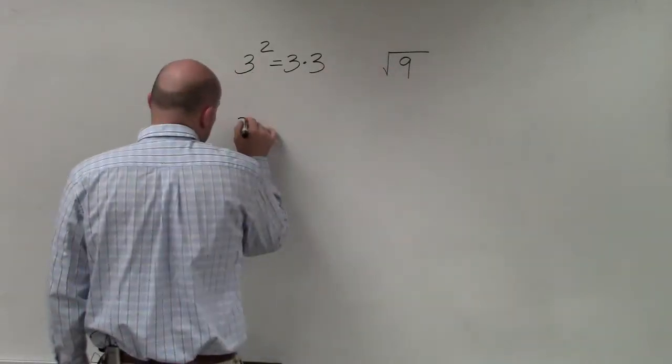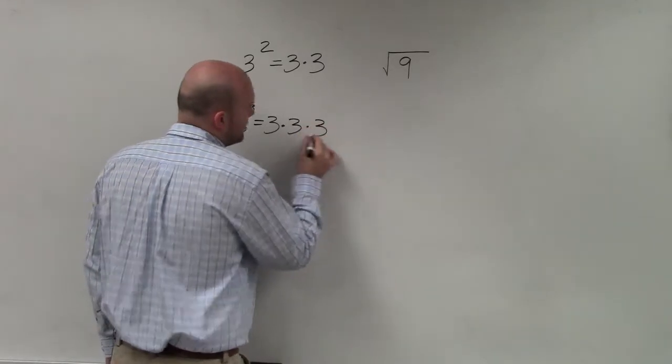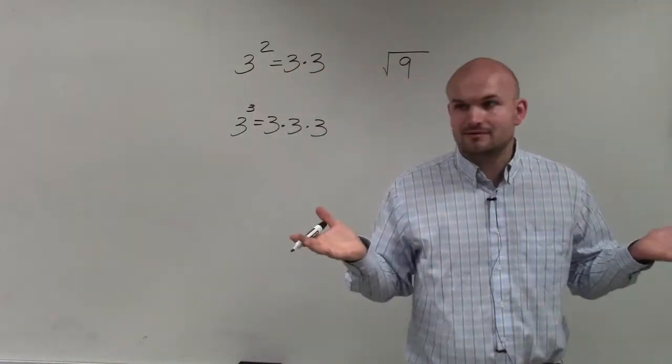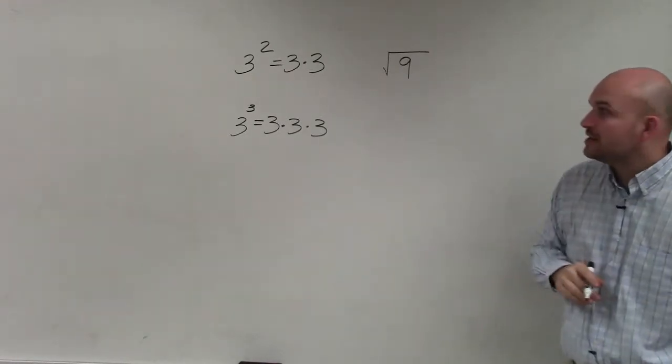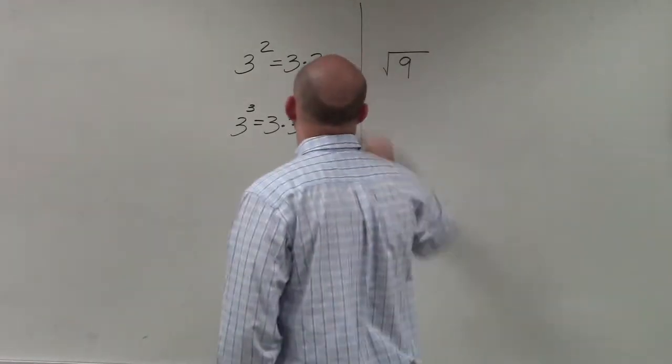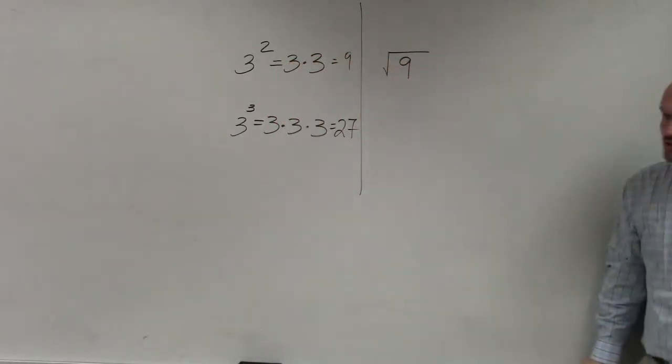So if I was going to write 3 to the third power, that would equal 3 times 3 times 3. Does everybody follow me with that? We're good. And obviously, we know that 3 squared is going to equal 9, and 3 times 3 times 3 equals 27. Does everybody follow? OK.